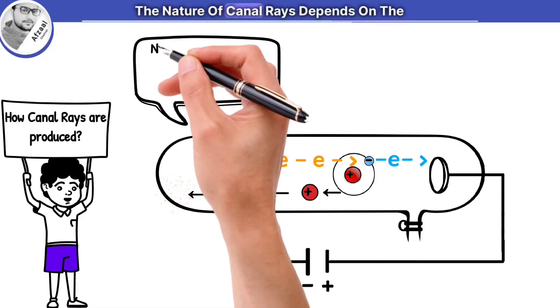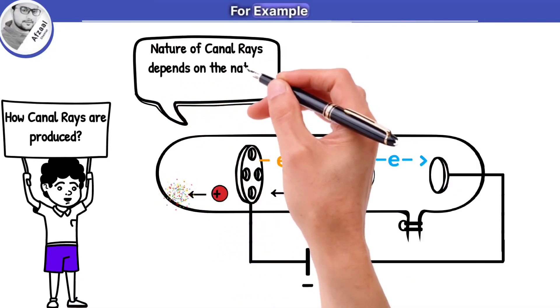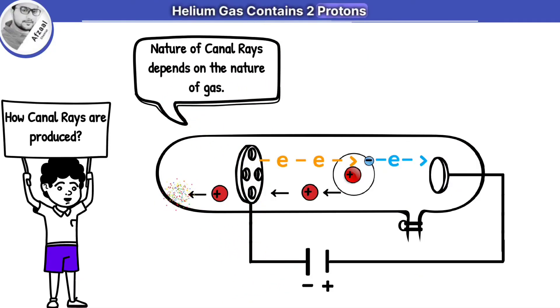The nature of canal rays depends on the nature of gas. For example, helium gas contains two protons. So, the canal rays produced by helium have two protons, so double the mass compared to hydrogen.